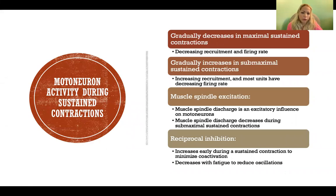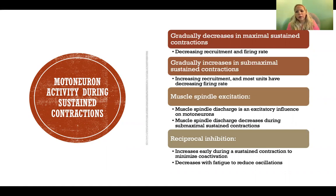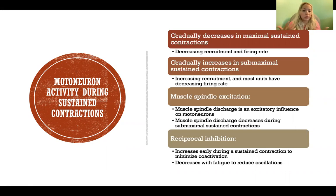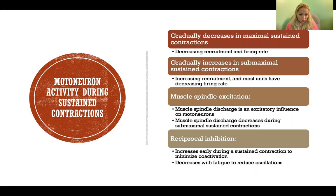Muscle spindle excitation also has a significant effect on motor neuron activity. Muscle spindle discharge is an excitatory influence on motor neurons. Muscle spindle cells run the length of the muscle and they discharge when there's a change in length of the muscle. When the muscle is stretching, the muscle spindles are constantly sending feedback to the central nervous system about the length of the muscle and the rate of change of length. When the muscle spindles discharge, it is excitatory to the motor neurons supplying the motor units and fibers of that muscle.